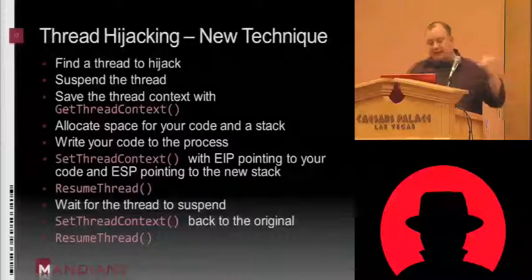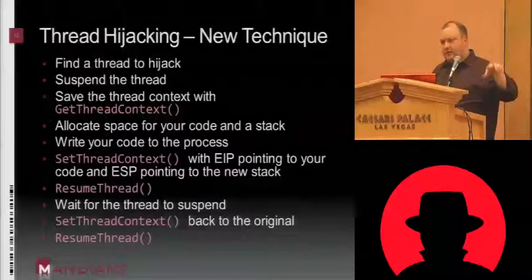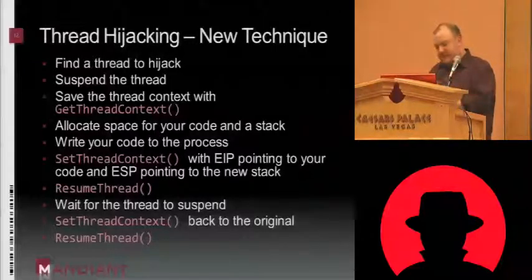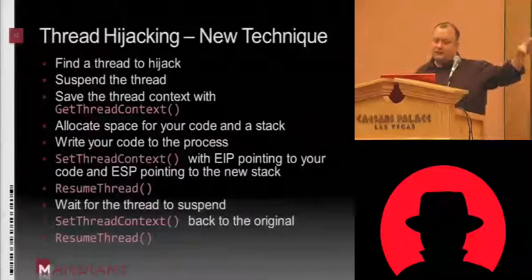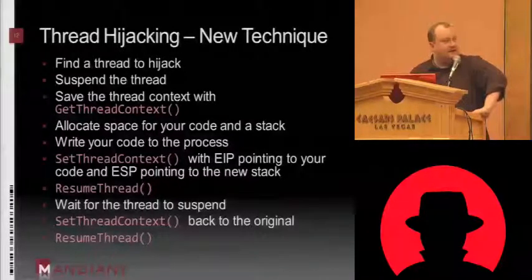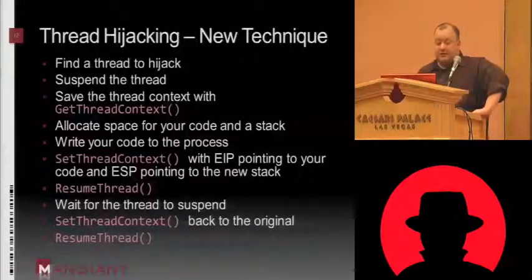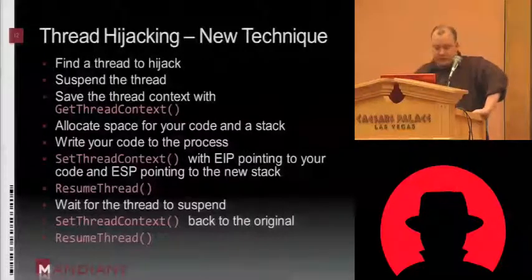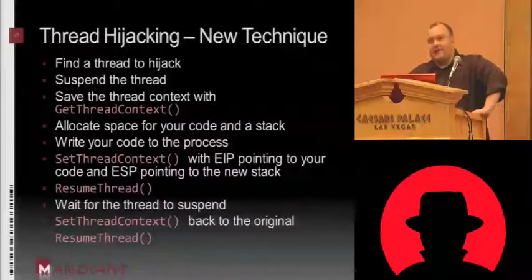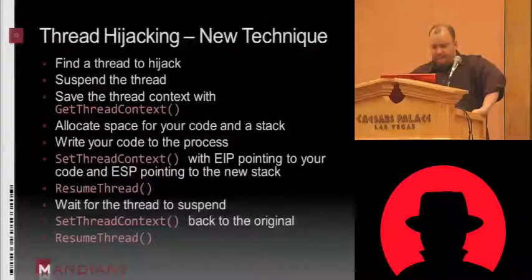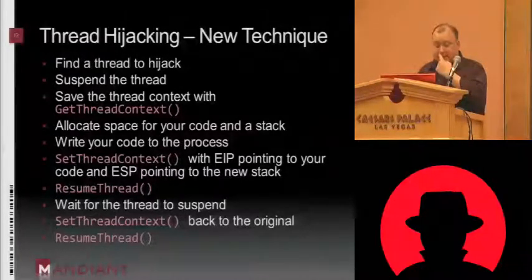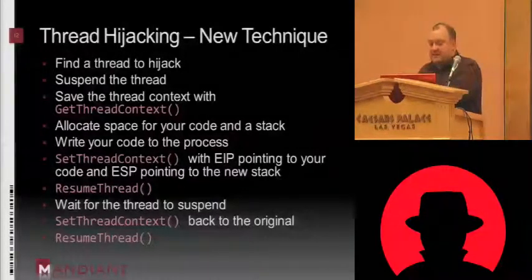Another technique — it's not fully implemented in my tool yet, so I went ahead and posted the proof of concept code on my website along with the tool. You can at least see how I'm doing this technique, and it will eventually make its way into Binject as well. This technique is called thread hijacking. What I do is find a thread I want to hijack — typically the main thread of a process, like explorer.exe. I suspend the main thread, do a GetThreadContext to save off all the register context, then allocate space for my new code. The key difference is I also allocate a new stack — a completely new area for my code.